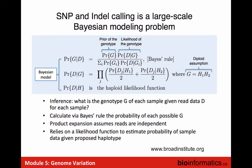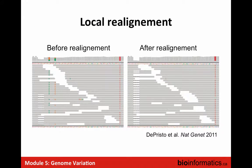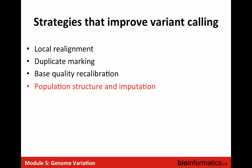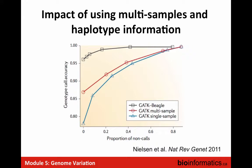The HaplotypeCaller uses a different formula that incorporates haplotype structure, and this has been shown to give better performance - especially when you don't have many reads. At positions covered by only a couple of reads in a single sample, the call will sometimes be wrong, but joint calling across multiple samples improves accuracy at those positions.